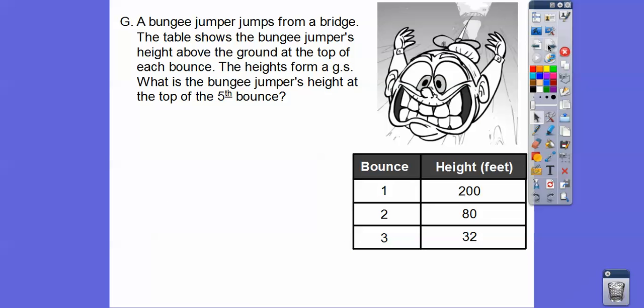So here's a bungee jumper — and that would be me, scared for my life. A bungee jumper jumps from a bridge. The table shows the bungee jumper's height above the ground at the top of each bounce. The first bounce is 200 feet, the second bounce is 80 feet, the third bounce is 32 feet. These heights form a geometric sequence. What's the bungee jumper's height at the top of the fifth bounce?